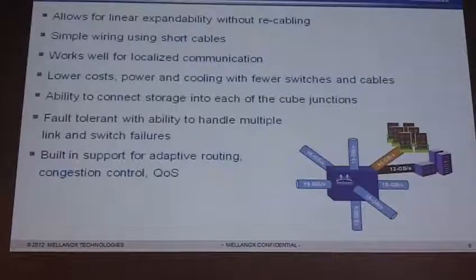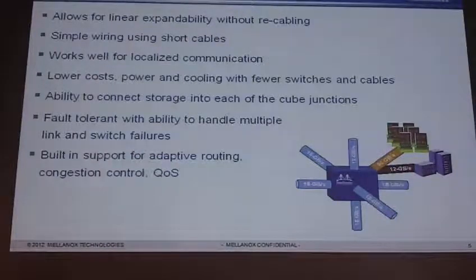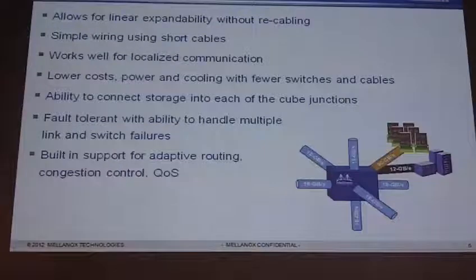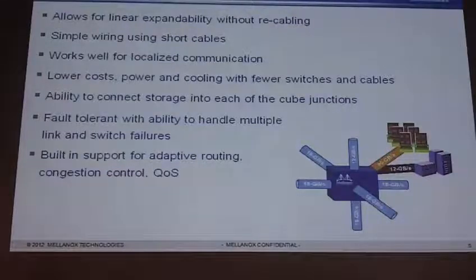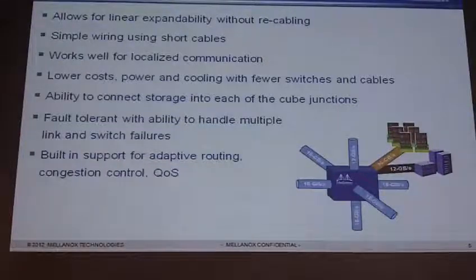Some of the benefits of this 3D Taurus: it allows for linear expandability without recabling. With a FatTree, if I want to add servers, I often have to recable the whole thing. With 3D Taurus, I simply disconnect one of the ends, add more nodes, and reconnect. It allows for simple wiring using shorter cables, works well for localized communication, and at times provides lower costs, power, and cooling because it has fewer switches and cables. We also have the ability to connect storage into each cube junction, and it's fault tolerant with the ability to handle multiple link and switch failures. It also has built-in support for adaptive routing, congestion control, and QoS — many of the same features I get with FatTree.